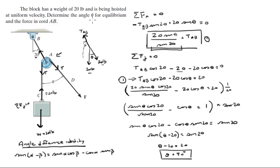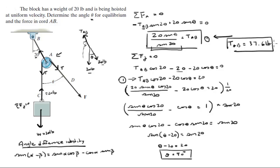For equilibrium the angle theta is 40 degrees. Plugging 40 degrees into Equation 1 gives tension AB equal to 37.6 pounds. The tension in CAD is 20 pounds.